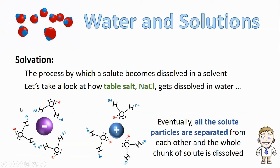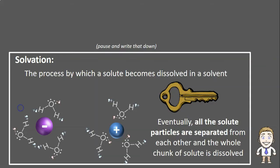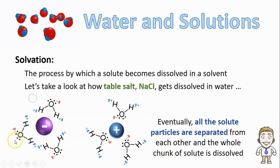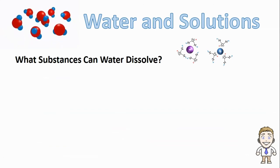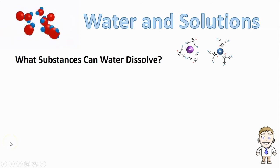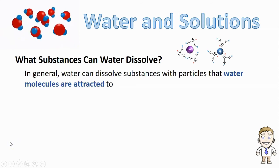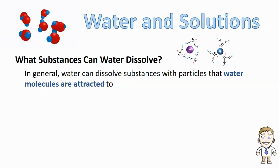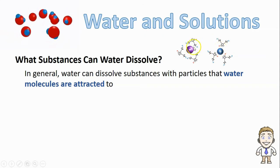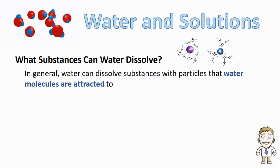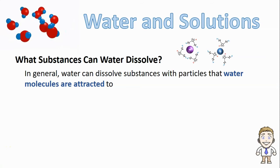That's what happens during the process of solvation and that's how water can dissolve things. That's also one of our key ideas for this video, so make sure you take a minute to draw out these little models and write a brief description of what's taking place. This is also a good time to talk about what types of substances water can actually dissolve, because it can dissolve a lot of things, but it can't dissolve everything. In general, water can dissolve substances with particles that water molecules are attracted to — just like we saw with the positive and negative ions in salt.